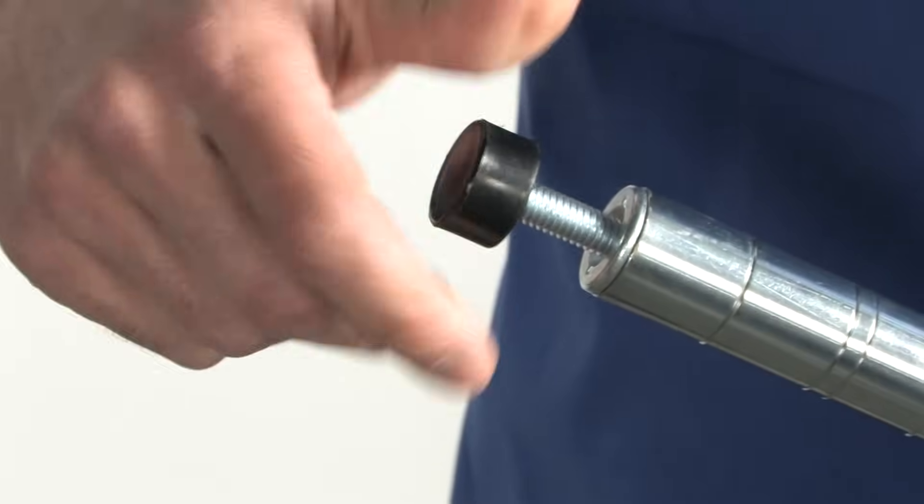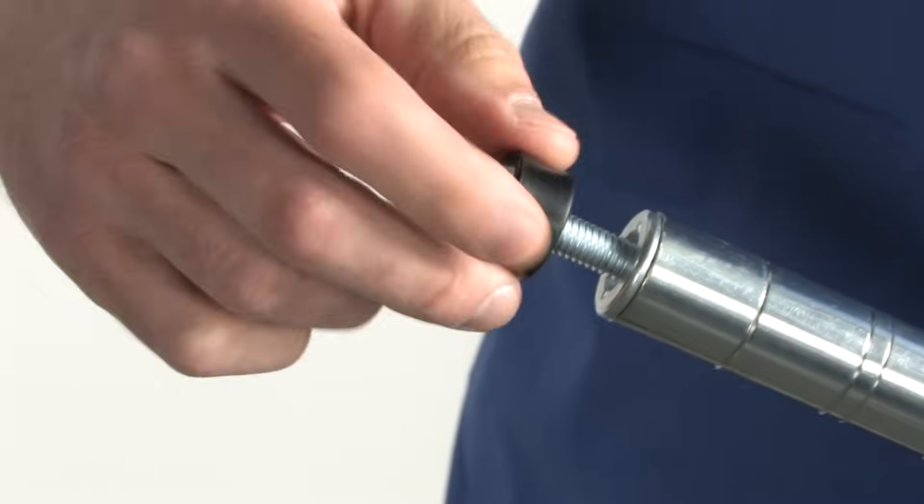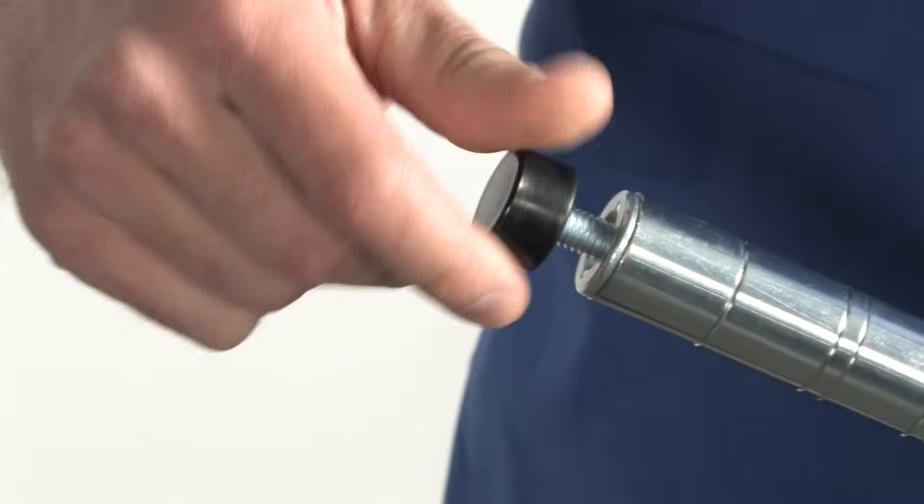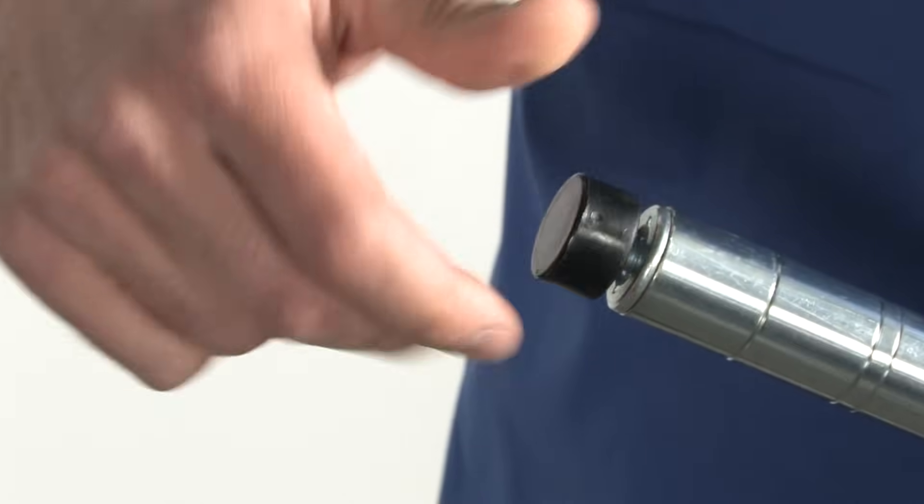Start by placing the leg level insert at the bottom of the leg. Twist until the level is fully inserted into the leg.